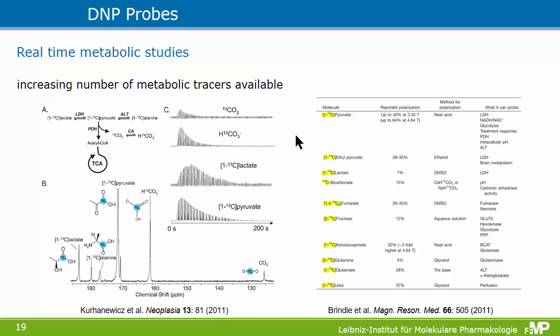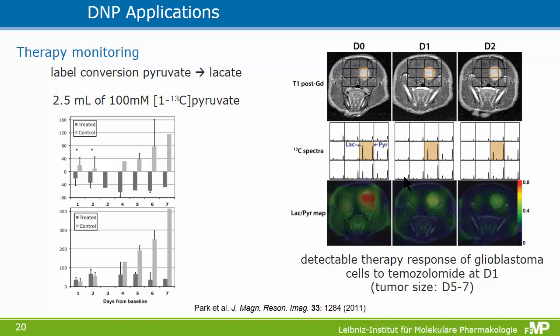I brought one example from an early animal study I found intriguing, showing treatment of glioblastoma in a rat with temozolomide. In conventional anatomical imaging you don't see a shrinkage of the tumor until day five to seven — the treated animals first show a stop in tumor growth and then a decrease in tumor volume, while untreated animals still increase in tumor volume. But on the metabolic imaging, when you monitor the lactate-to-pyruvate ratio, you see already from day one a difference in metabolic behavior, where you can detect a response to the treatment.